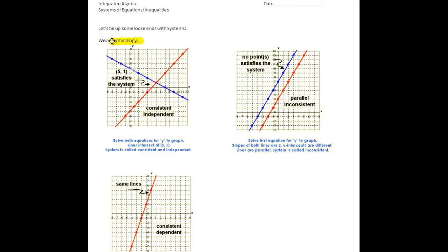So if we have what we consider to be one solution to our system, then we call that a consistent system that is independent. It's consistent because it has an answer, and it's independent because these are two independent things. And we have actually one solution to the answer.